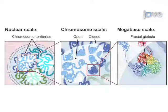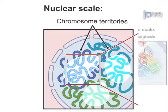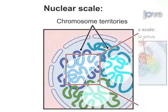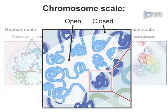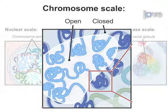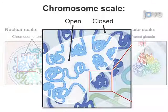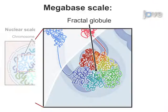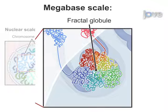These results provide us with insights into the folding of chromatin, revealing the presence of chromosome territories, the compartmentalisation of the genome in open and closed chromatin, and evidence for the fractal globule organisation at the megabase scale.